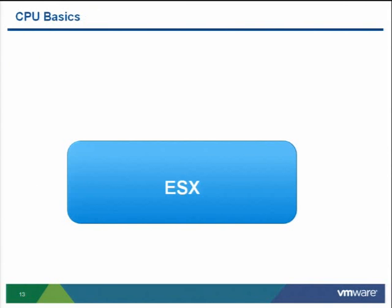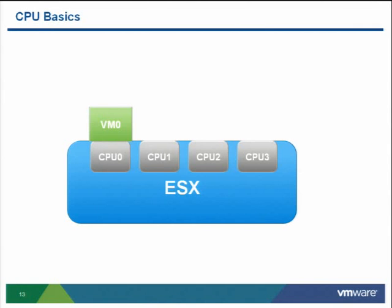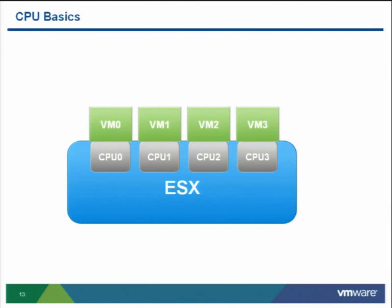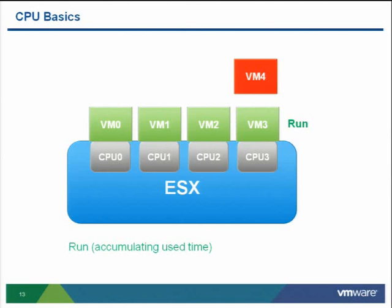The easiest way to explain CPU performance problems is to first go over how the ESX CPU scheduler works. Imagine an ESX host with four CPUs and several single-CPU VMs. When there's no over-commitment, each VM wanting CPU can run — it's in the run state, accumulating used time. When a VM wants to run but there's no available physical resource, it accumulates ready time. If you're constantly in a ready state, it means you constantly want to run but there's no resource available, causing performance issues.